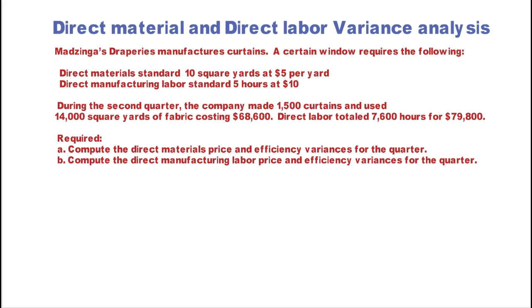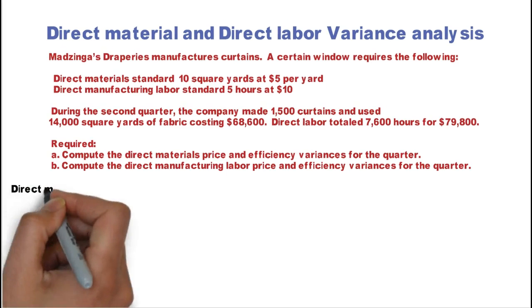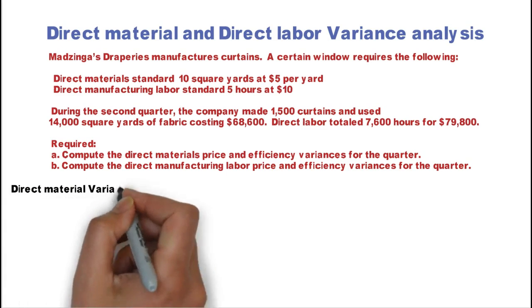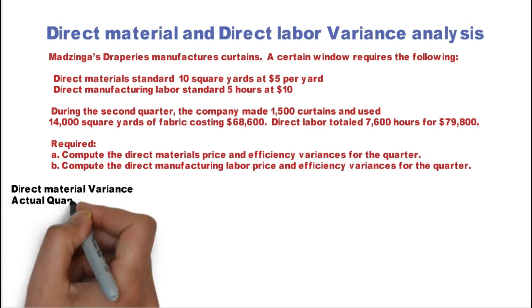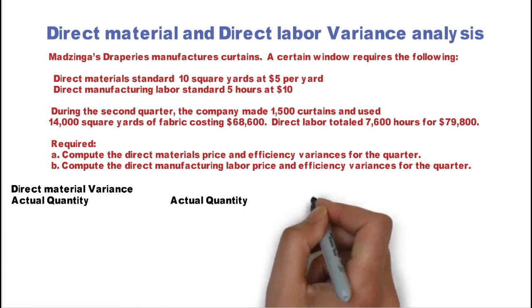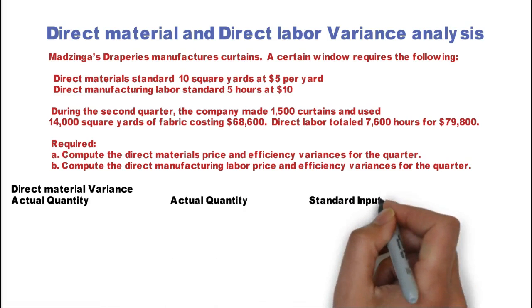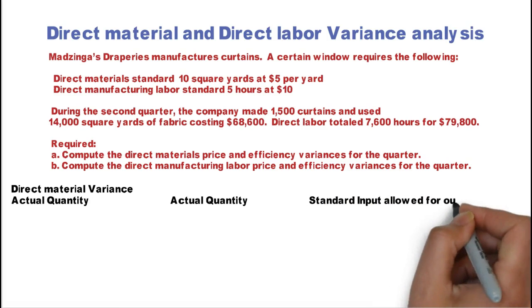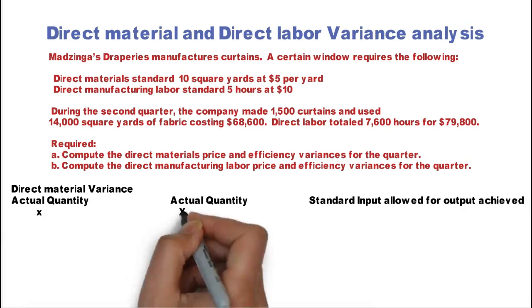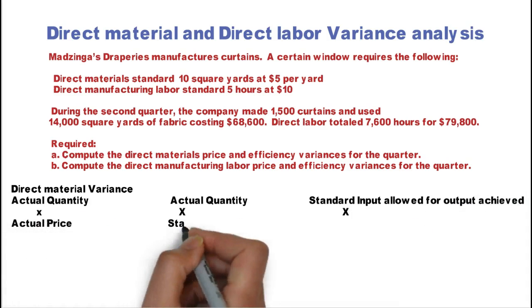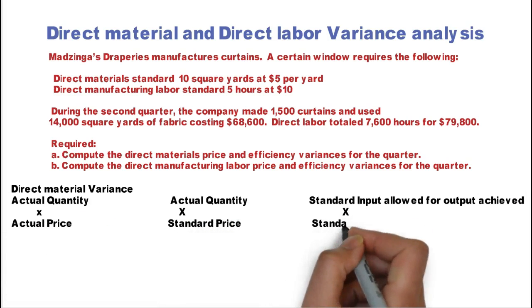So compute the direct material price and efficiency or quantity variance and the direct labor rate and quantity variance. To begin with, let's start with the direct material variance. We set up the matrix: actual quantity on the left times the actual price.